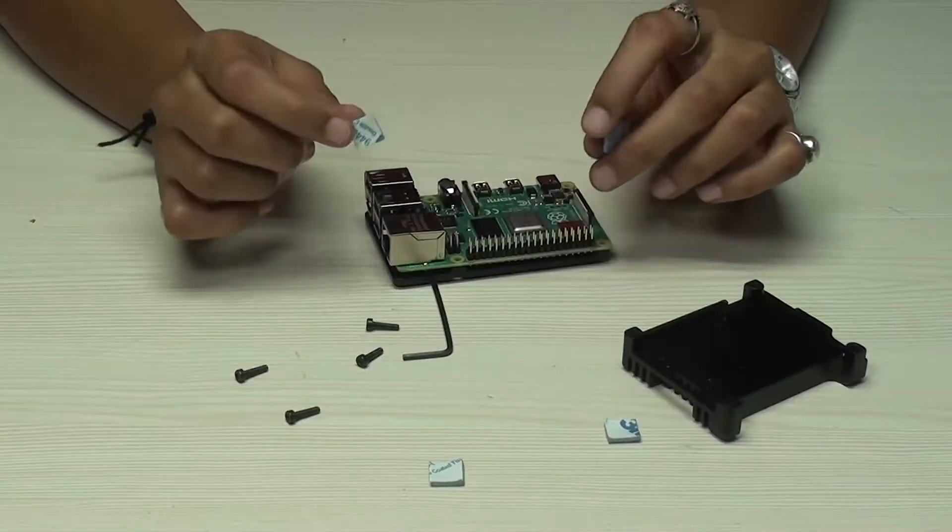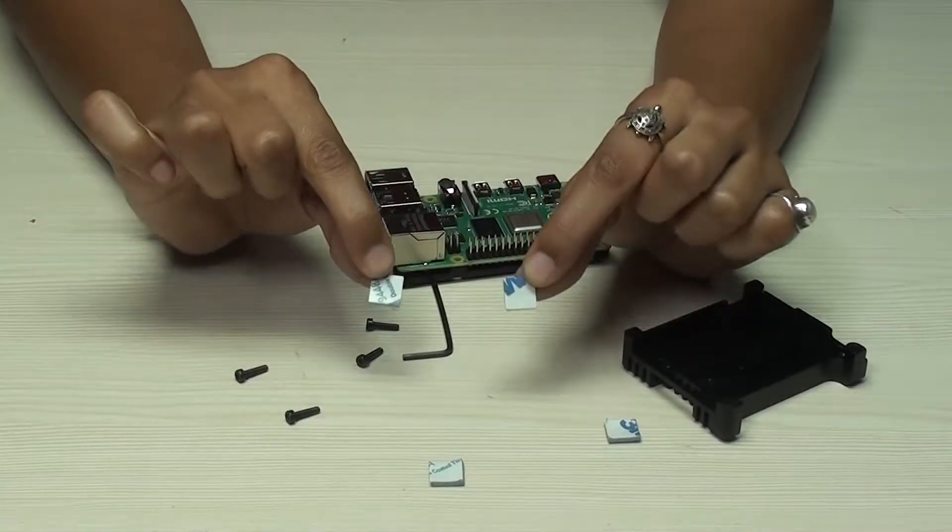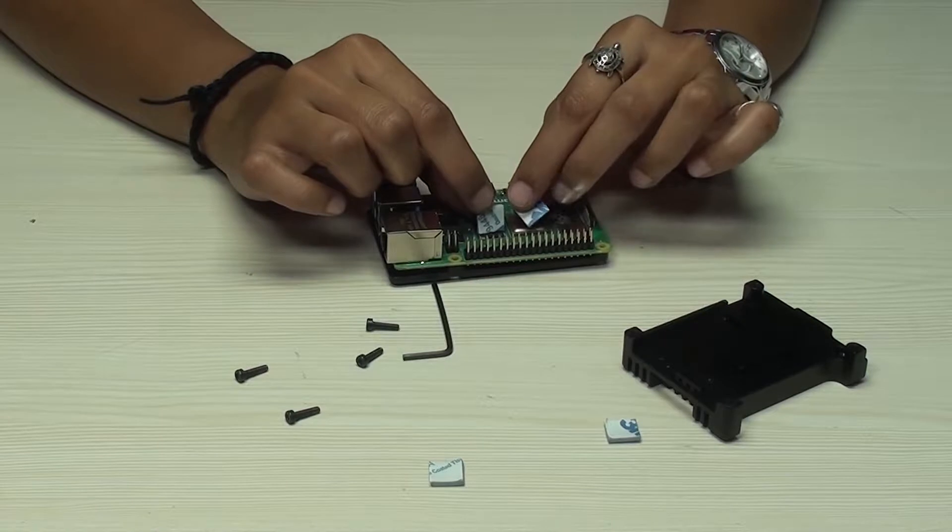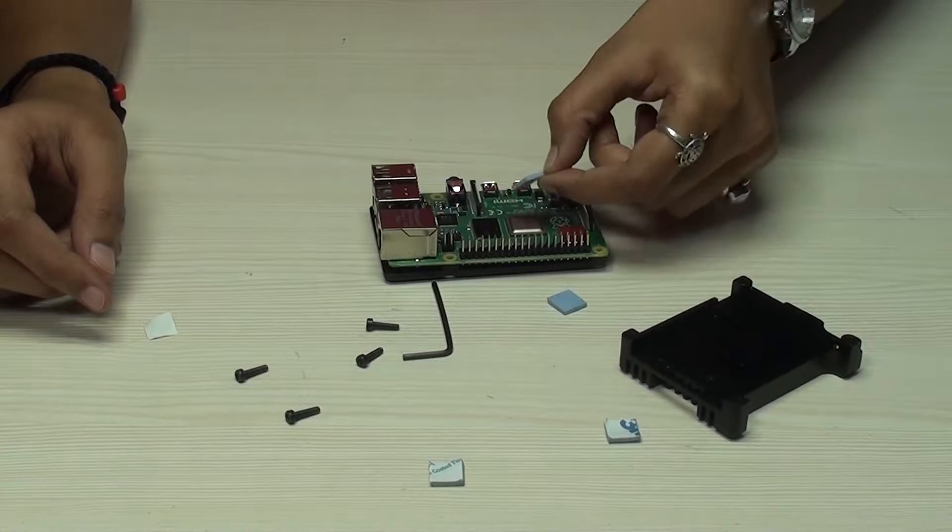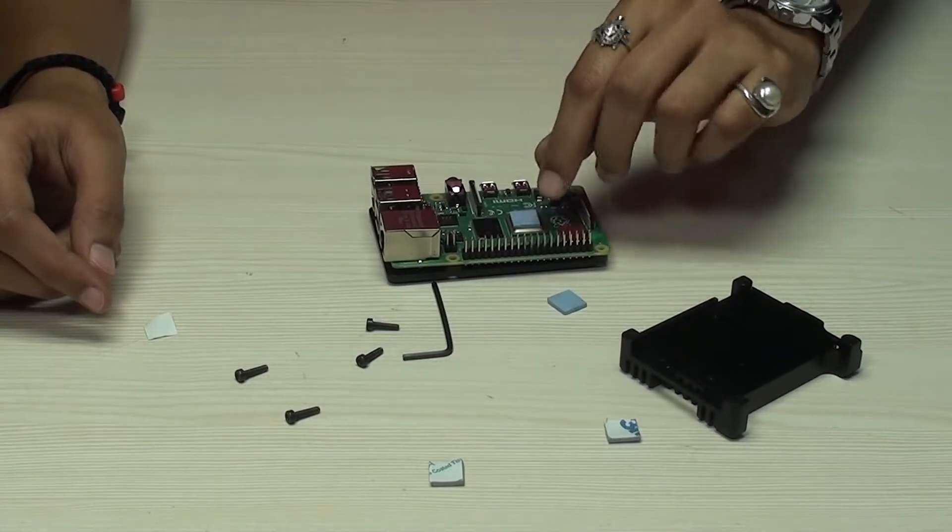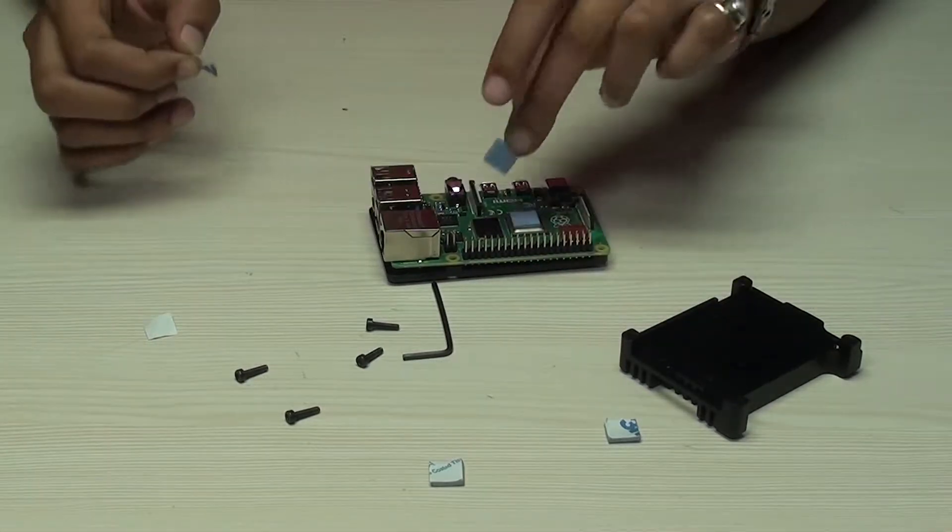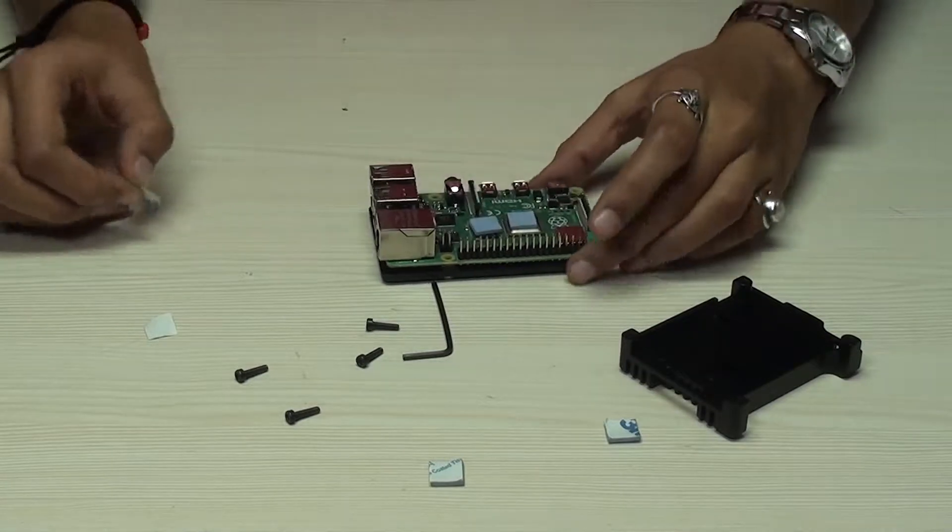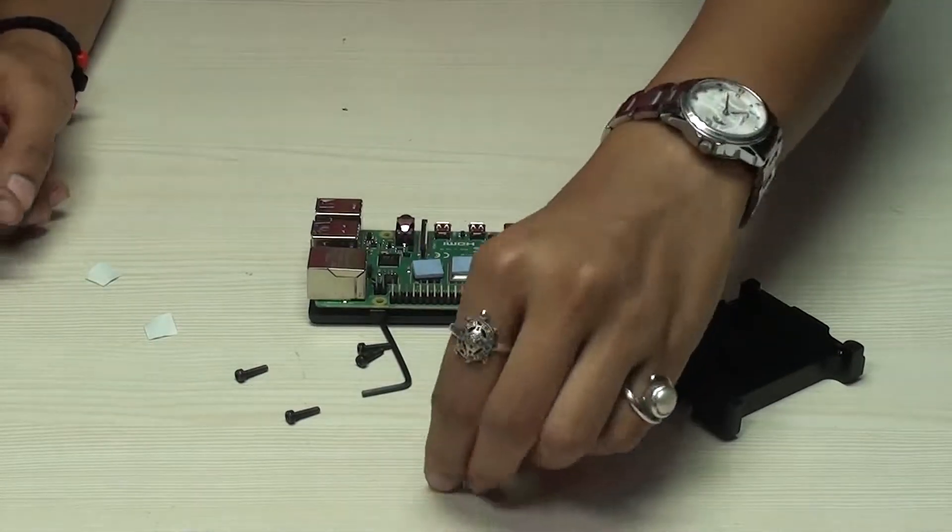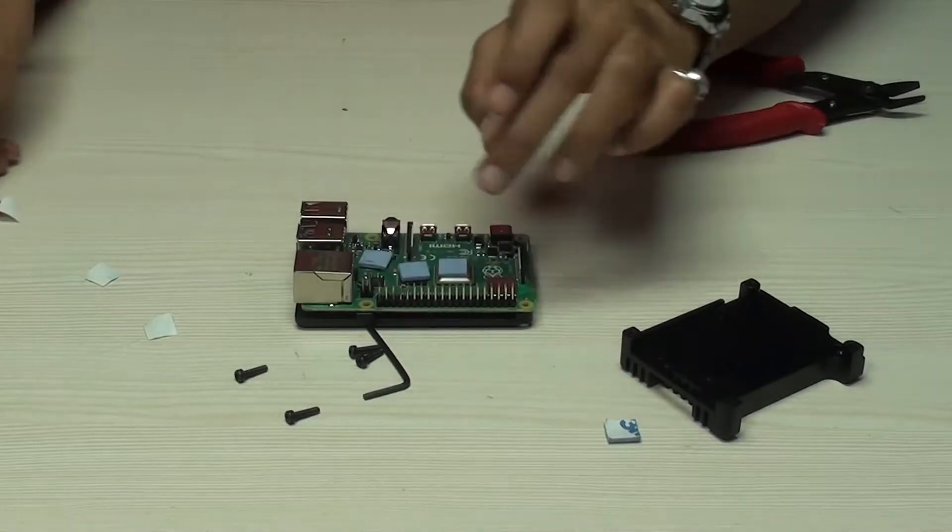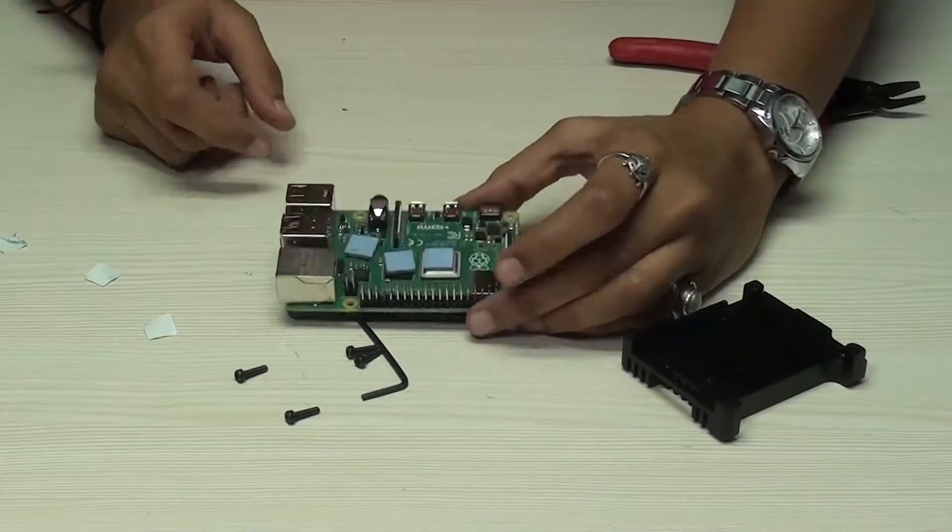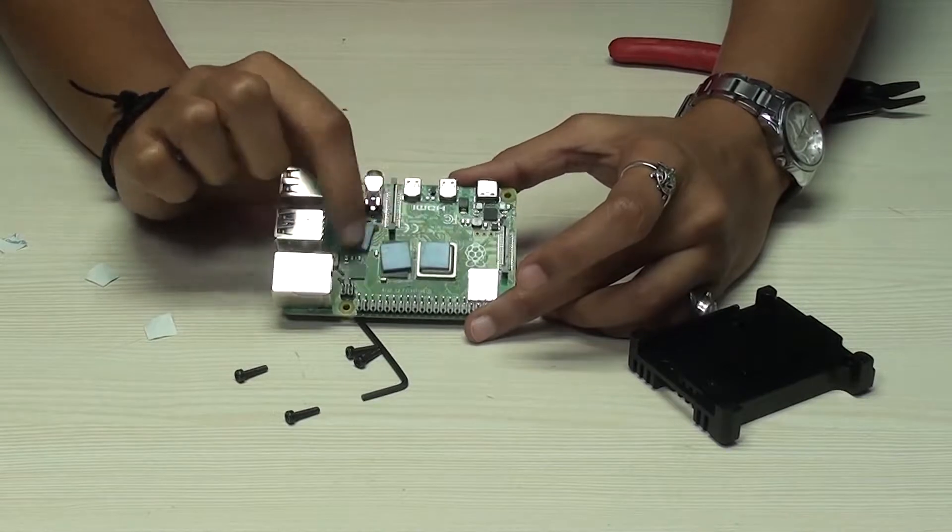It is important to install these thermal tapes for providing contact with the conduction surface of the heatsink. You can see I have attached three thermal tapes here.